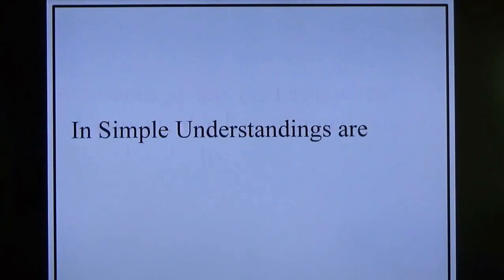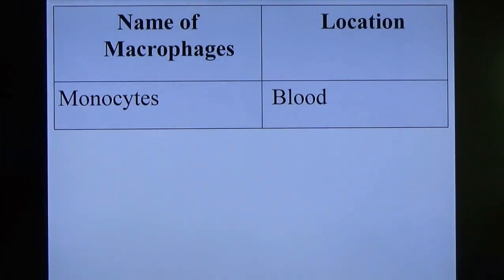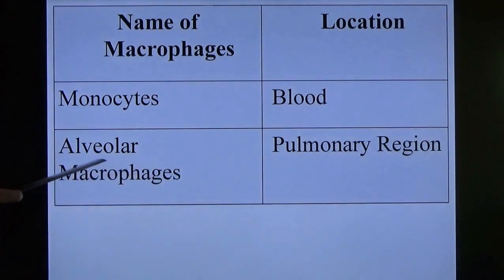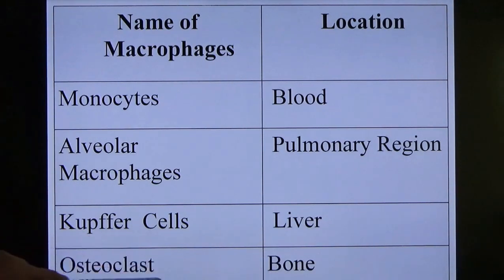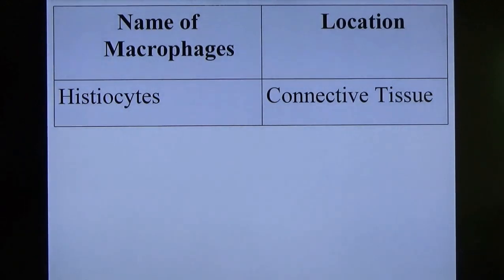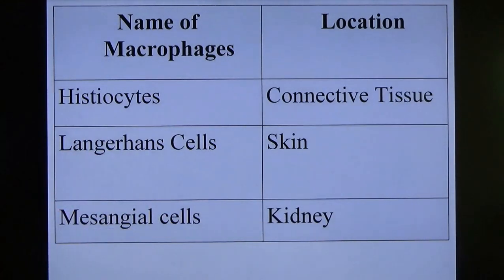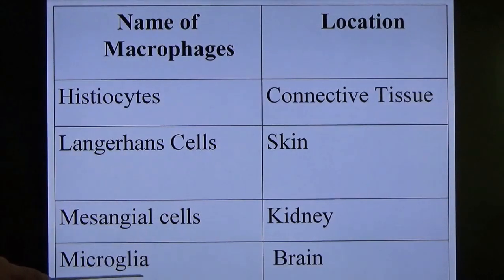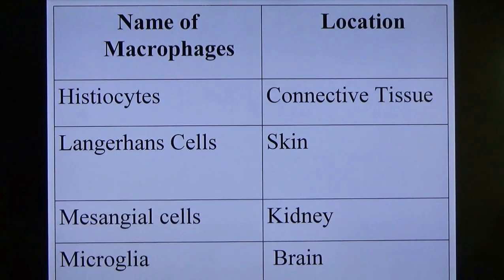The same cell present in the blood is known as monocyte. The same cell present in the lungs (pulmonary region) is called alveolar macrophages. The same cell in the liver is known as Kupffer cells. In bone, it is called osteoclast. In connective tissue, it is called histiocytes. In skin, it is called Langerhans cells. In the kidney, it is the mesangial cell. In the brain, it is called microglia. So the same cell in different locations has different names. When in the blood it is monocyte; when in tissue it is macrophage.